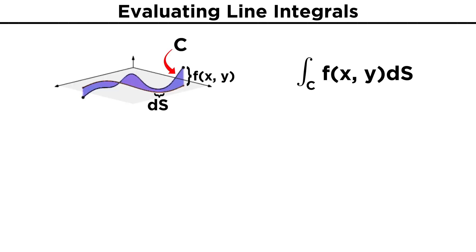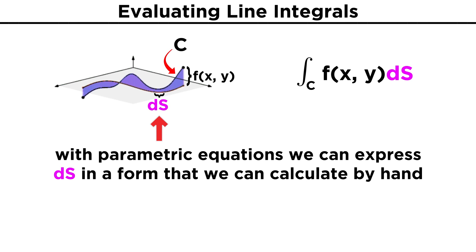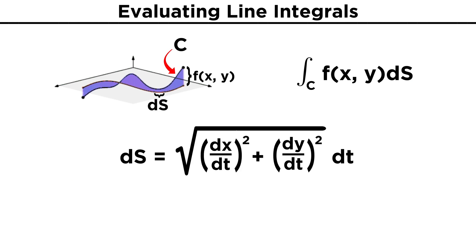Now why are parametric equations so useful for line integrals? With parametric equations, we can write out the ds term in the integral as something we can actually calculate by hand, so ds ends up being equal to root dx dt squared plus dy dt squared dt. This represents the infinitesimal space between two points along the curve C, with an incremental change to the parametric variable t.